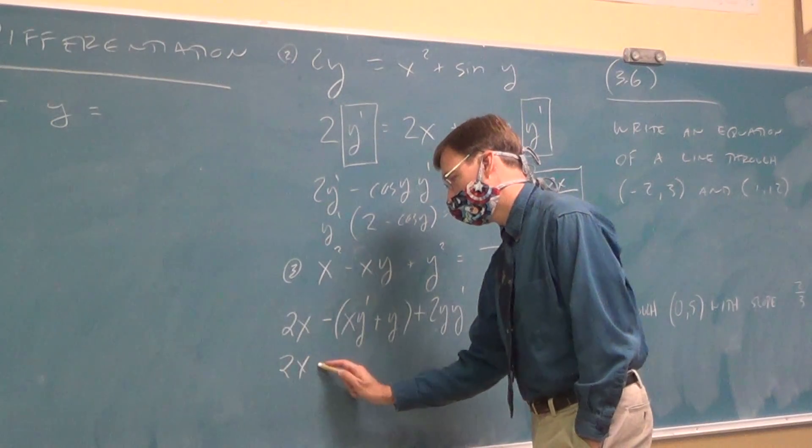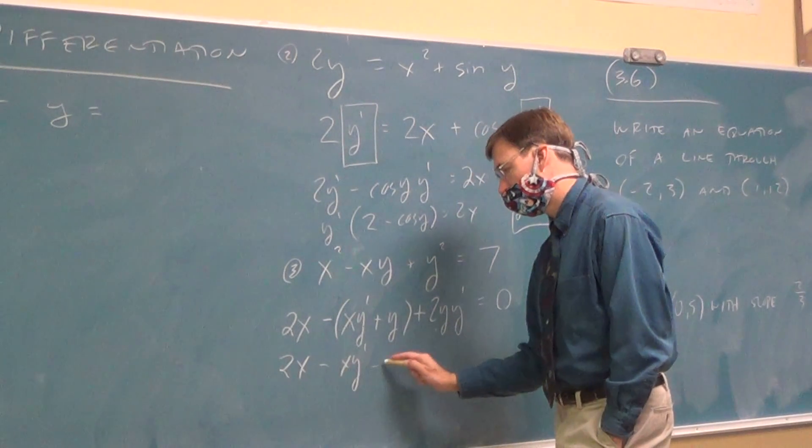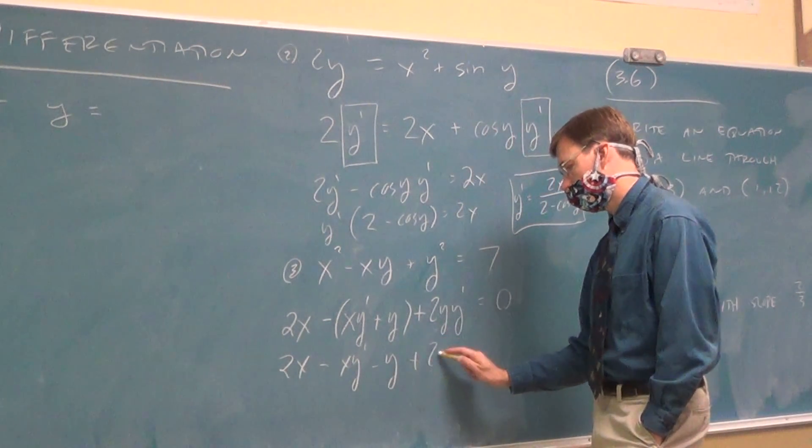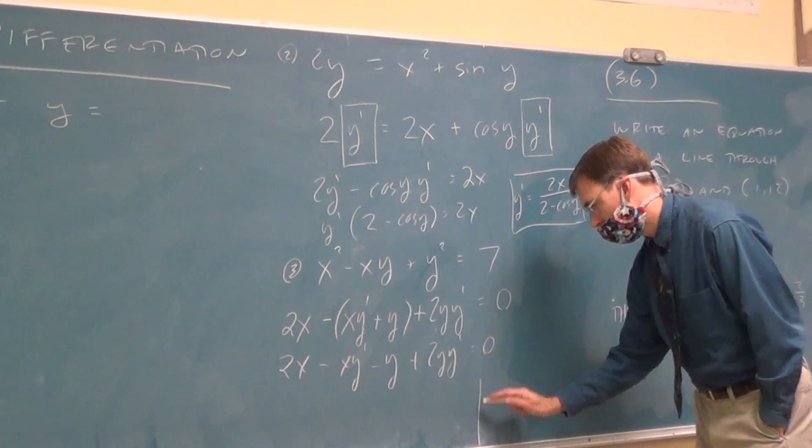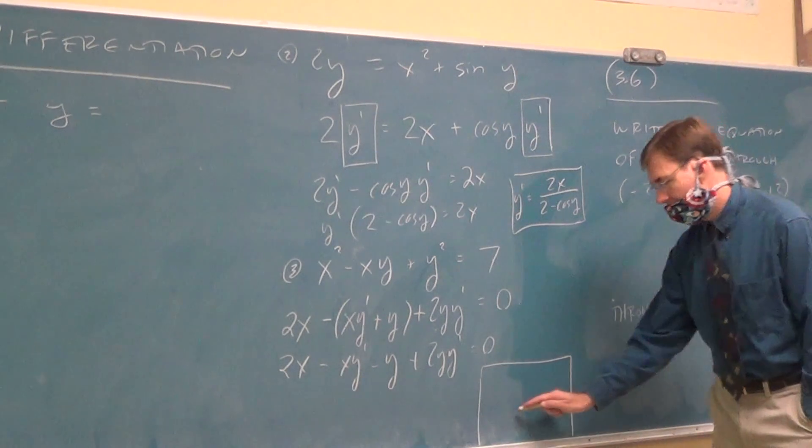Clean that up a touch. So something like 2X minus this piece minus the other piece. Plus 2YY prime equals zero.